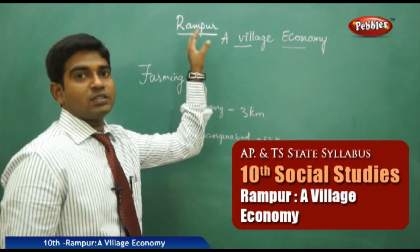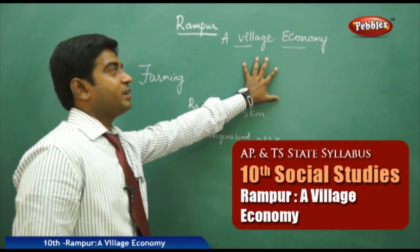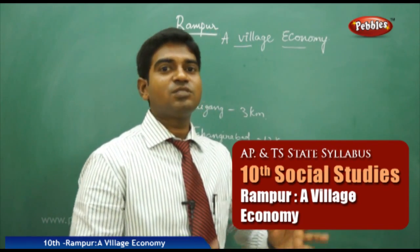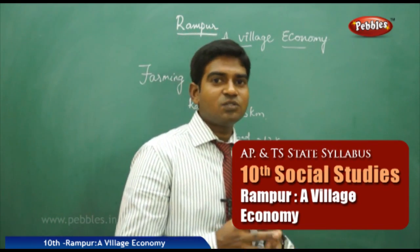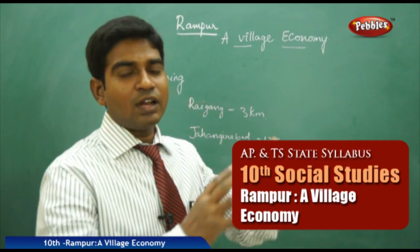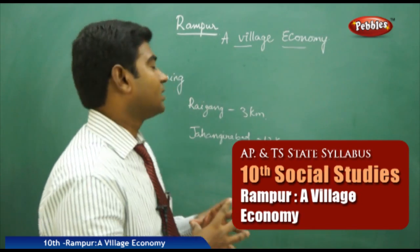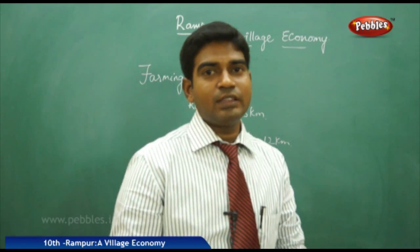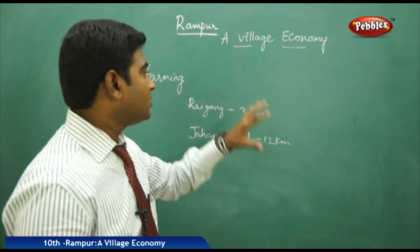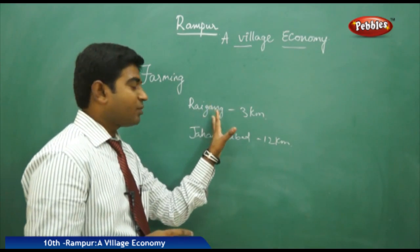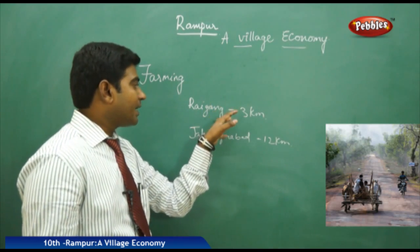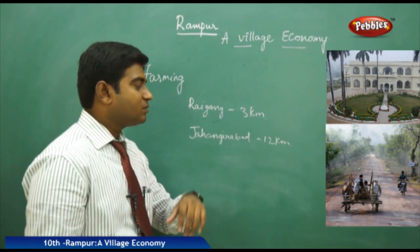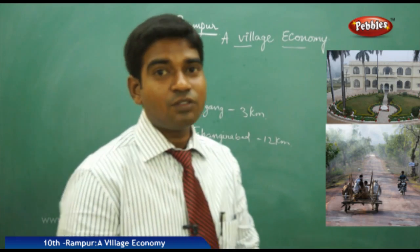The story of the Rampur village — here we are going to study about the village economy. The name of the lesson is Rampur, which is the name of the village; the name may have been changed from the original. It is a village located in the Uttar Pradesh region, very close to Punjab and the Delhi headquarters region. Rampur is very close to a big village called Rai Ganj, which is three kilometers away, and a town called Jahangirabad, which is 12 kilometers from Rampur.